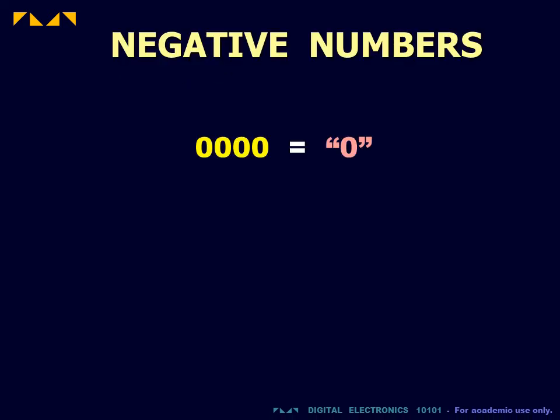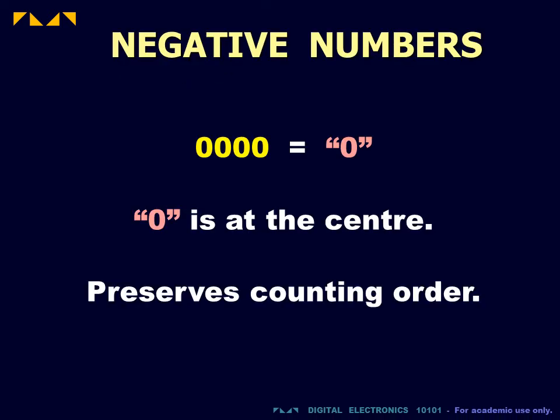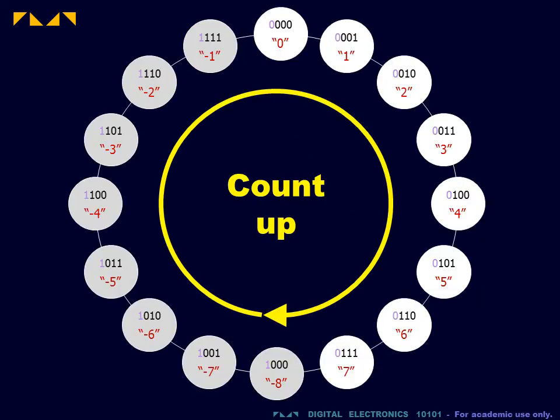We therefore add a third constraint. Our system for representing negative numbers must preserve the binary counting order. That is, when we arrange the numbers according to the binary counting sequence, we will count up through our numbers in a clockwise direction whether these numbers are negative or positive.